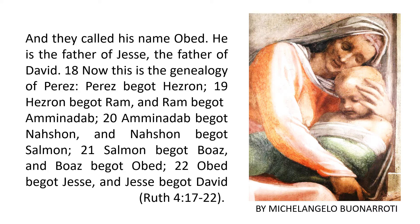David's genealogy in Ruth chapter 4 begins with Judah's son Perez: Perez begot Hezron, Hezron begot Ram, Ram begot Amminadab, Amminadab begot Nashon, Nashon begot Salmon, Salmon begot Boaz, Boaz begot Obed, Obed begot Jesse, and Jesse begot David — verses 18 through 22. And 1,200 years, or 14 generations later, Jesus of Nazareth is confirmed in Matthew's gospel to be the Son of David, Israel's designation for their coming Messiah, beginning with Abraham down through Solomon's bloodline to Joseph and Mary to Jesus, Matthew 1:6–17.